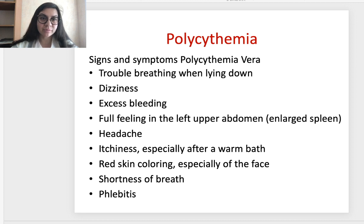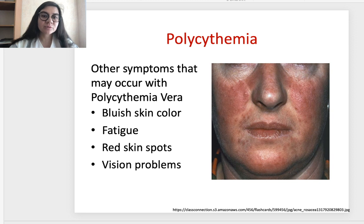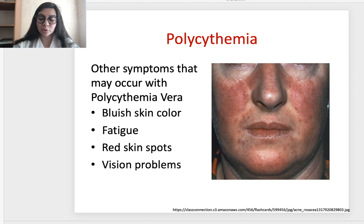Signs and symptoms of the primary disorder — the most dangerous form, polycythemia vera — include trouble breathing when lying down, dizziness, excess bleeding, a full feeling in the left upper abdomen with an enlarged spleen, headaches, itching especially after a warm bath, red skin coloring particularly of the face, shortness of breath, and phlebitis. Other symptoms include bluish skin color, fatigue, red skin spots, and vision problems. The picture here shows hyperemia and the typical red-faced appearance of a patient with polycythemia vera.